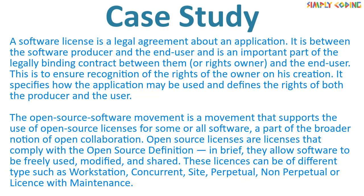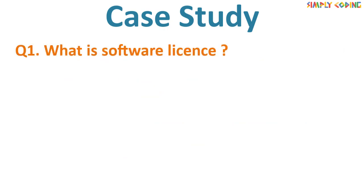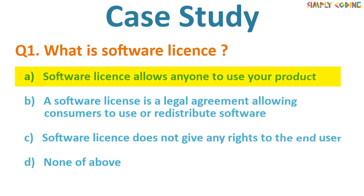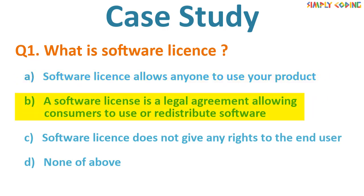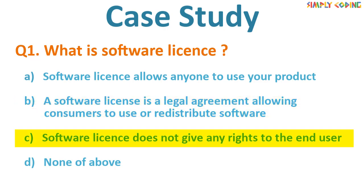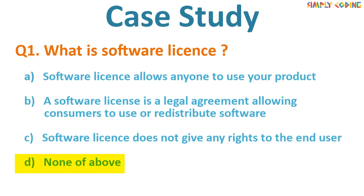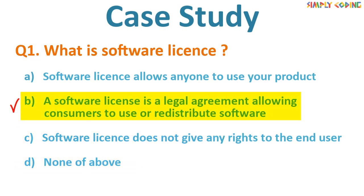This case study is about licenses and open source movement. I recommend you pause the video on each question and try to answer before I give the answer. First question: What is a software license? Options: A) Software license allows anyone to use your product. B) A software license is a legal agreement allowing consumers to use or redistribute software. C) Software license does not give any rights to the end user. D) None of the above. The correct answer is B — a software license is a legal agreement allowing consumers to use or redistribute software.